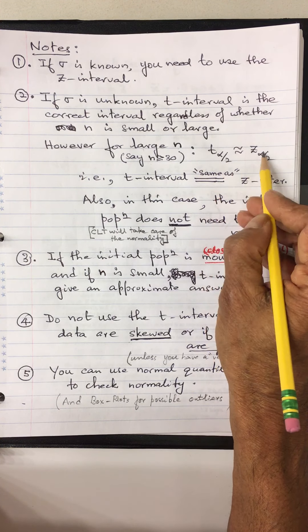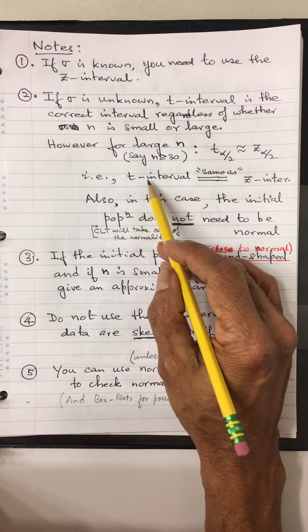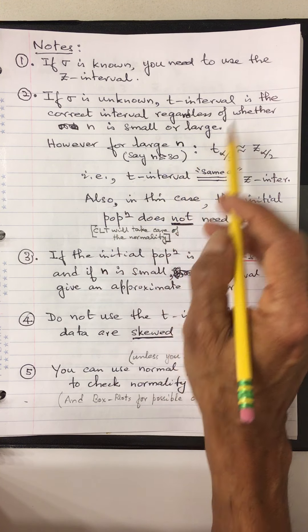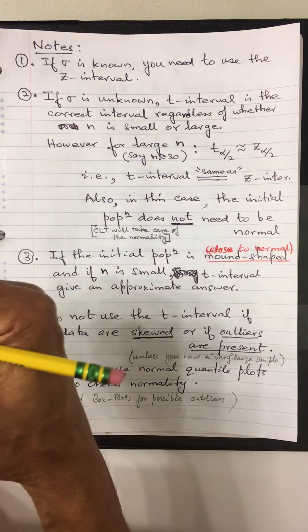So for large n, whether you use the t-table value or the z-table value your interval answer is going to be almost the same. But the t-interval is the correct approach — that's what the theorem gives you. Also, for very large n, we can use the central limit theorem and you can accurately estimate σ with s, so you can relax the normality assumption on the initial population.